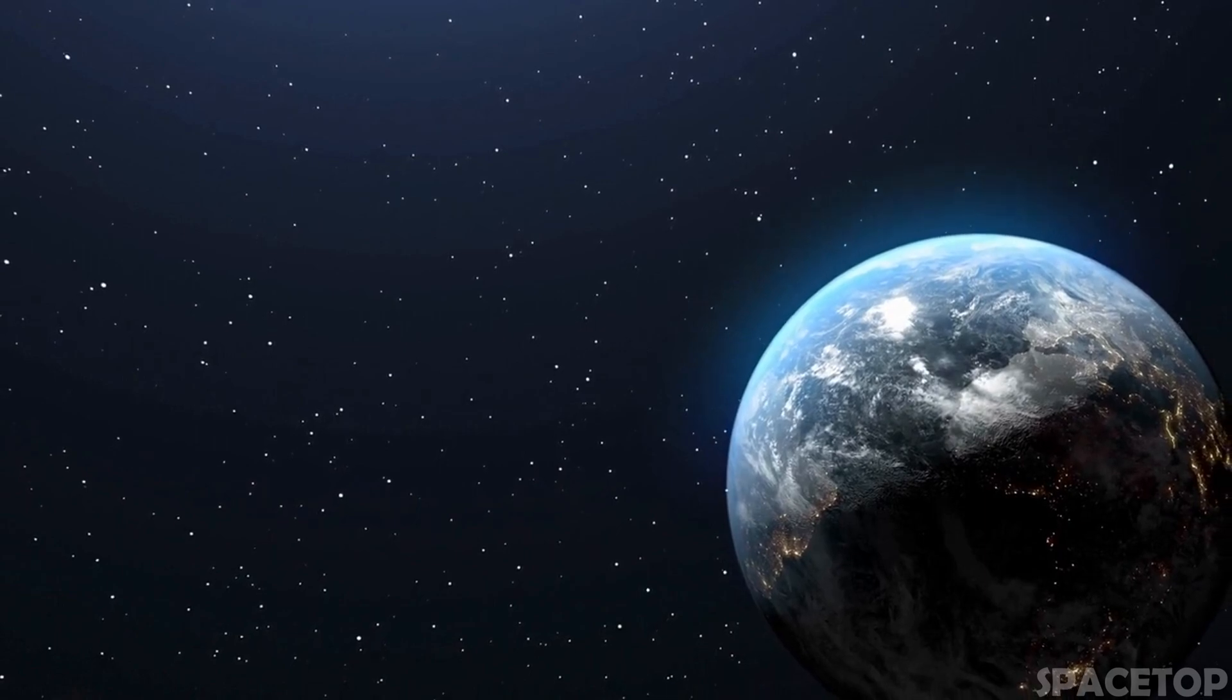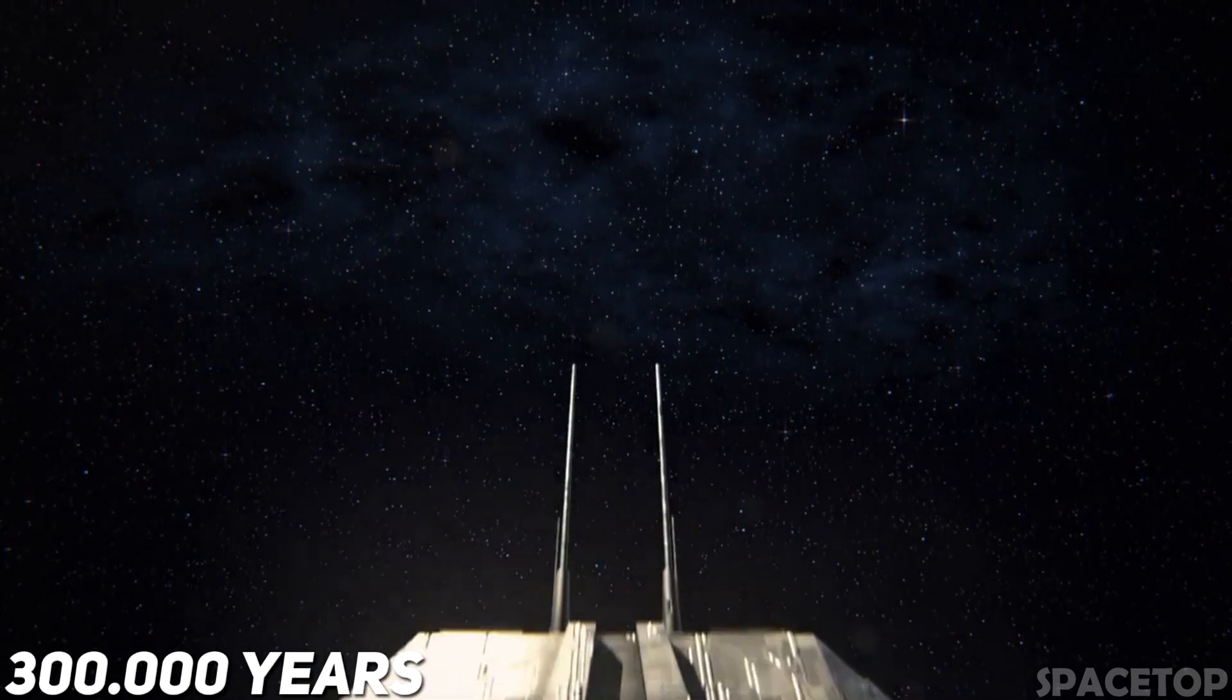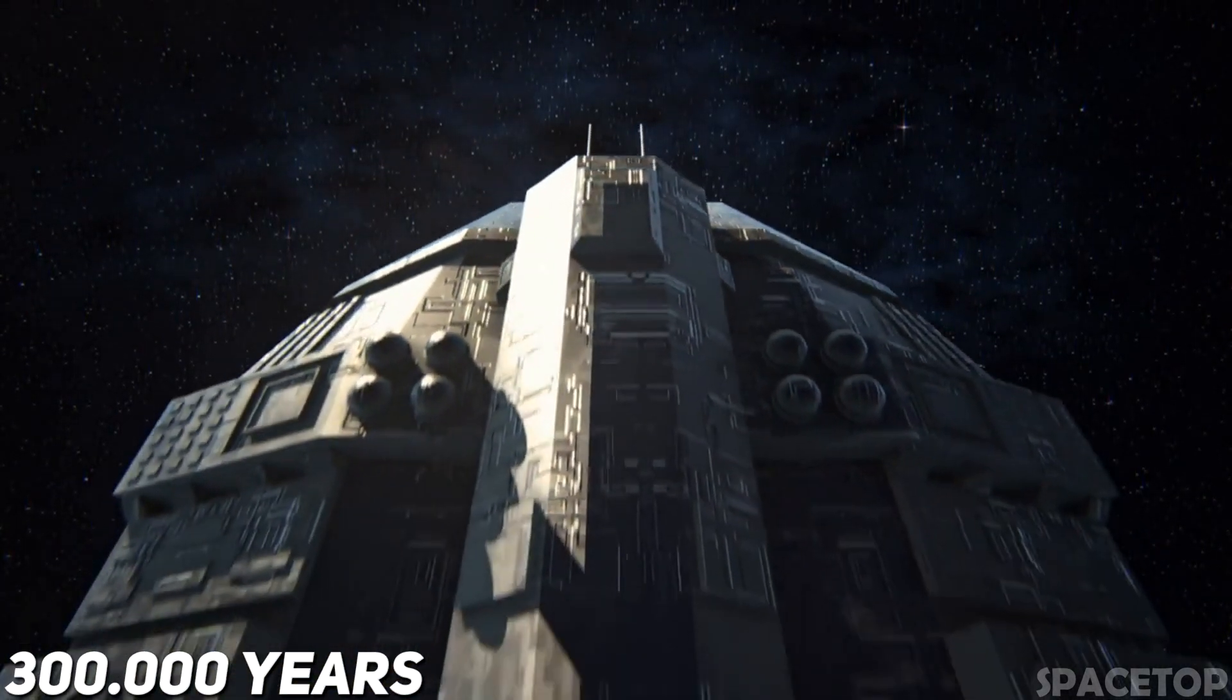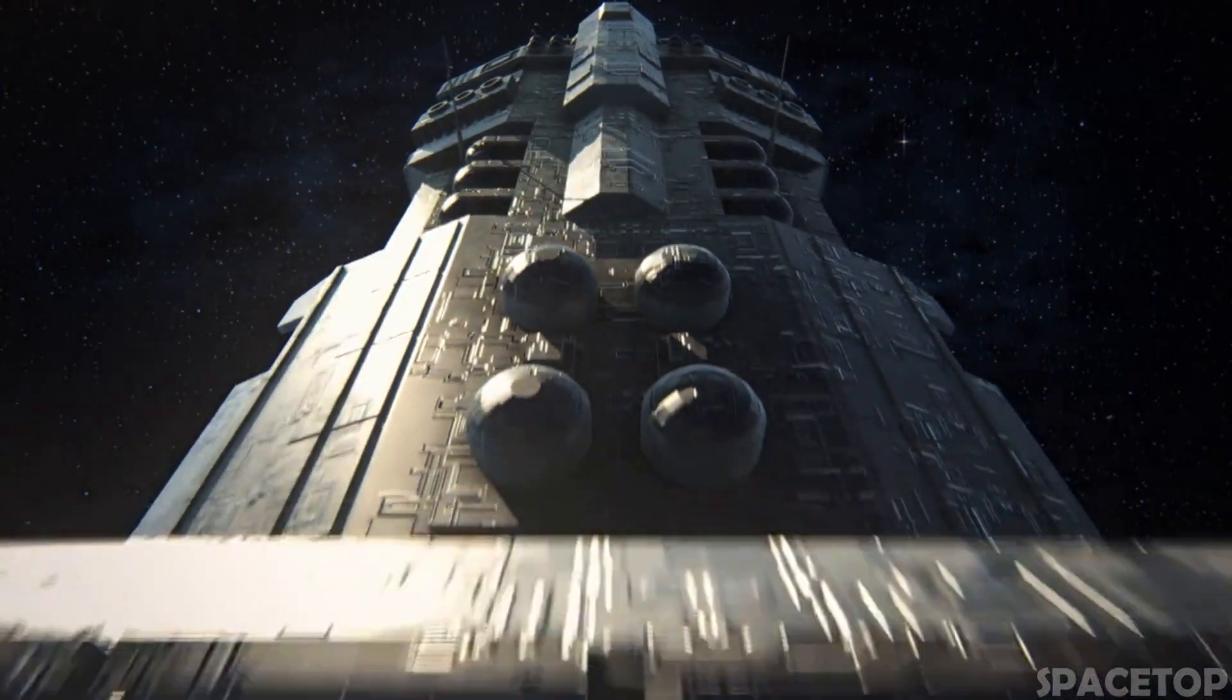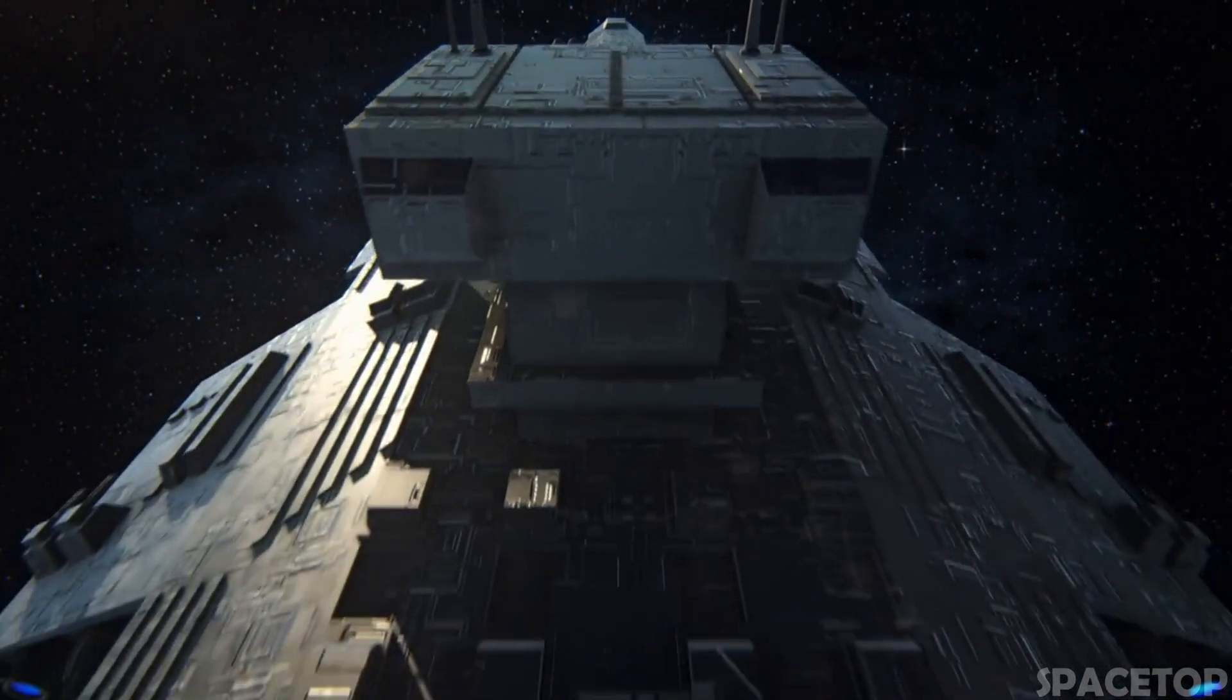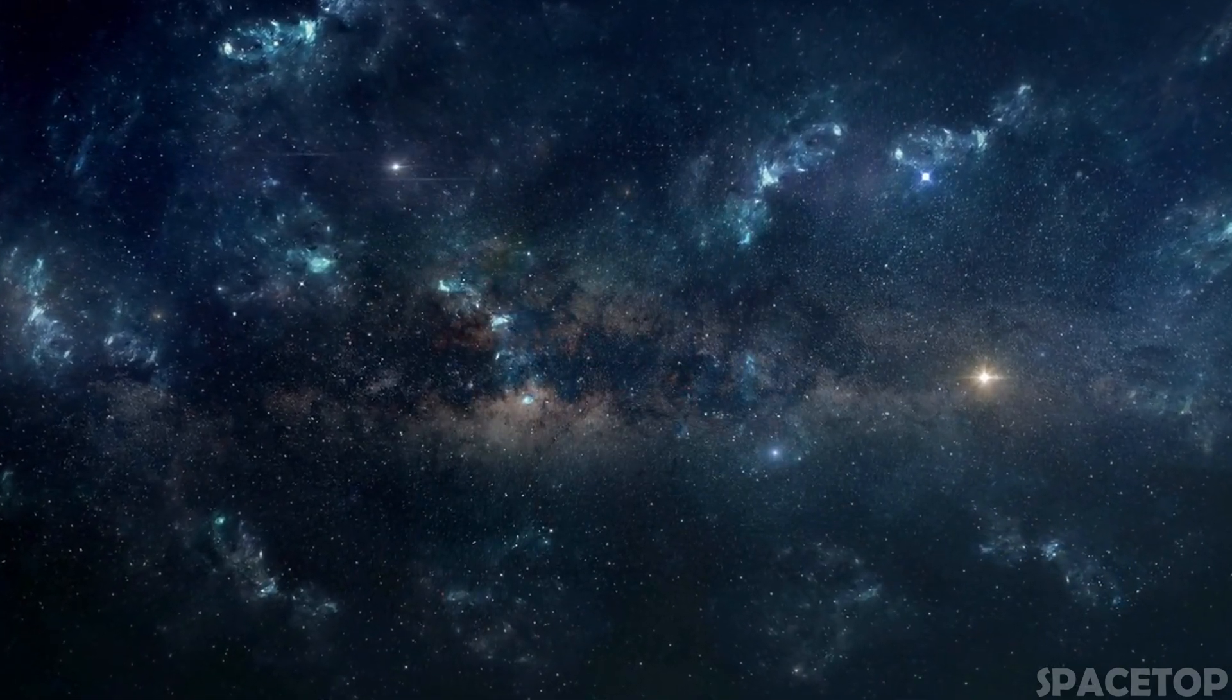a space probe departing from our system at a speed of about 17 kilometers per second would take as much as 300,000 years to reach the vicinity of the exoplanet. With our current level of technological progress, it is impossible to design an interstellar spacecraft capable of making such a long journey.